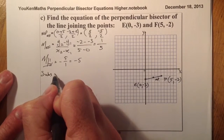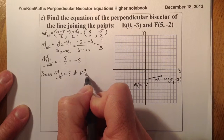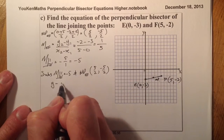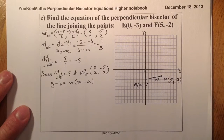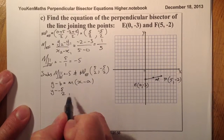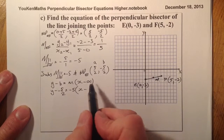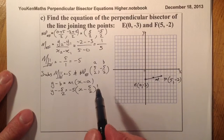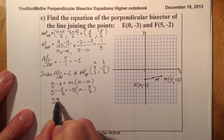I'll substitute the perpendicular gradient of minus 5 and the midpoint of EF — which is (5/2, -5/2) — into y minus b equals m times x minus a. So: y minus (minus 5 over 2) equals minus 5 times (x minus 5 over 2). That gives y plus 5 over 2 equals minus 5x plus 25 over 2.